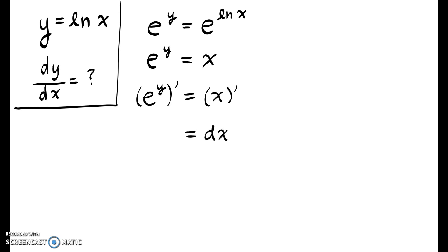The derivative of e to the y has a very special property. The derivative of e to the y is equal to itself times dy. So we get e to the y times dy equals dx.